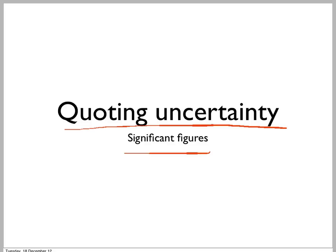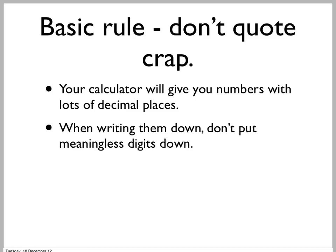The classic mistake that people make is to quote numbers to far too many significant figures. The basic rule is: don't quote crap. What this means is, let's say you're dividing 1.2 by 0.9 — your calculator will give you lots of decimal places. Don't write them all down. Only write down the ones that mean something. This means a bit more work for you, but less work for the reader, because they only have to read numbers that actually are not complete crap.